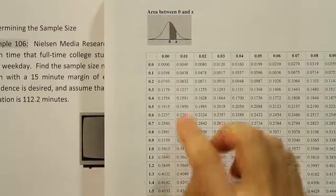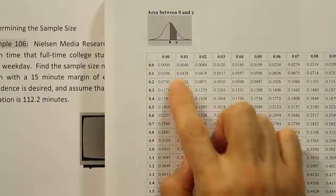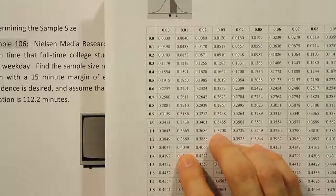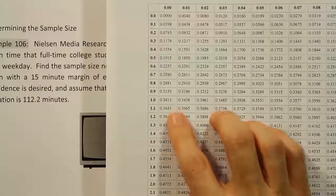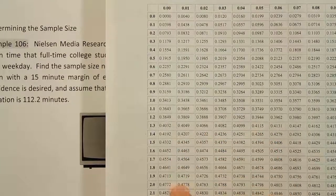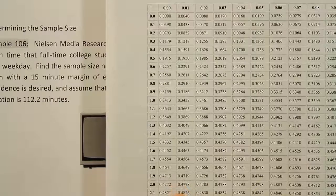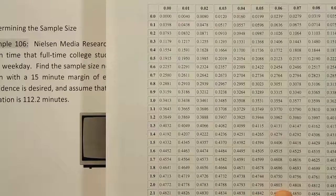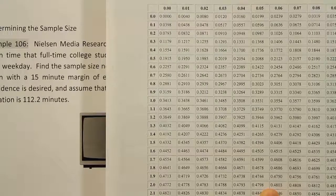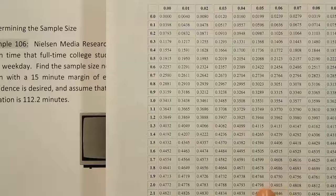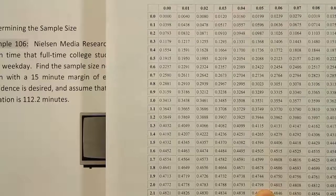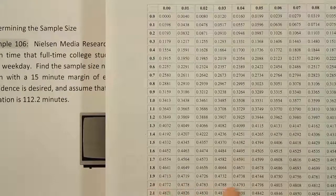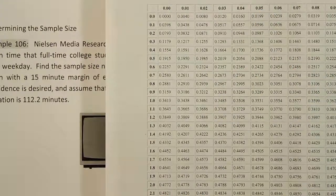We're looking for 0.4800 in the body of the Z table to find the corresponding Z score. Scrolling down, I see values close to 4800: 4772, 4821... Here's 4793, 4798, and 4803. The value 4798 is closest, only two ten-thousandths away. This is in the 2.0 row and 0.05 column, so the Z score is 2.05.